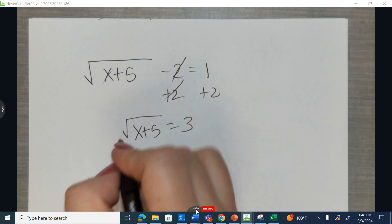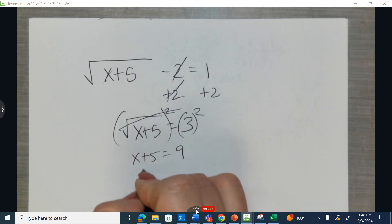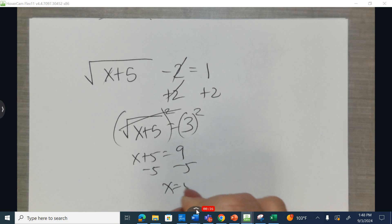Now to remove the radical, opposite of square root is squaring. x plus 5 equals 9, subtract 5, subtract 5, and x equals 4.